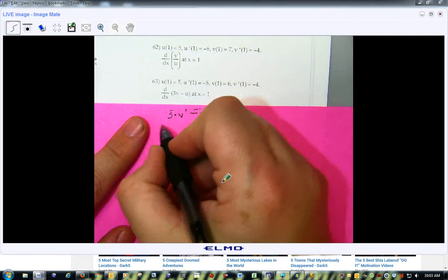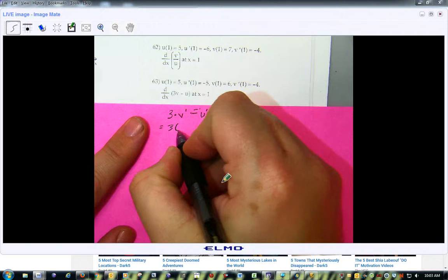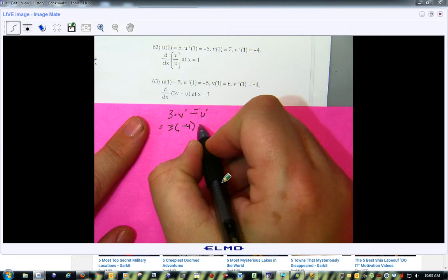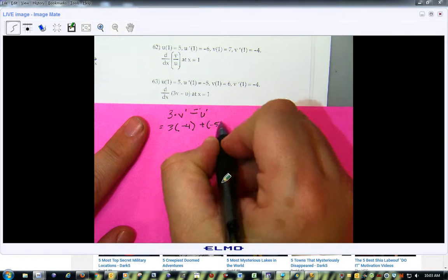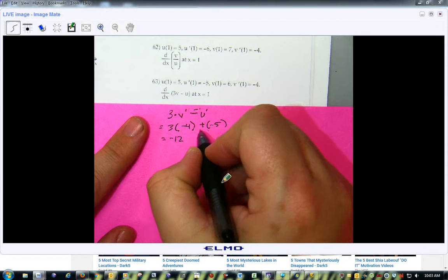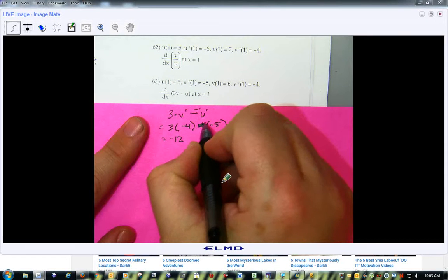And then, so, that'd be 3 times negative 4, which is v prime, plus negative 5. Eh, that should be minus. I was thinking ahead.